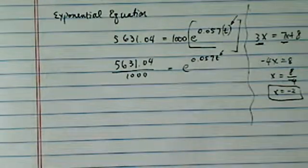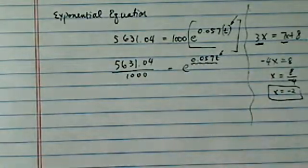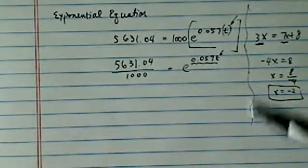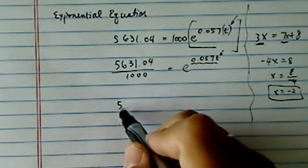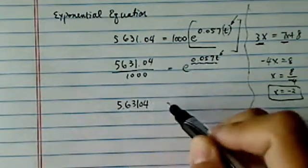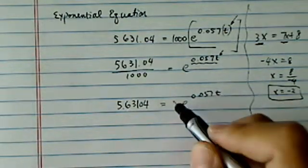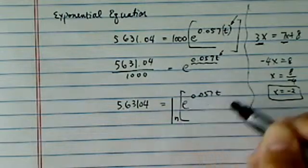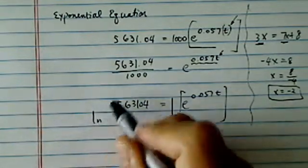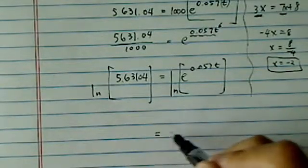We can take natural log on both sides. Natural log allows us to put exponential onto the floor. So this side is pretty easy. We have 5.63104 and then equal to e to the 0.057t. By taking natural log on both sides...